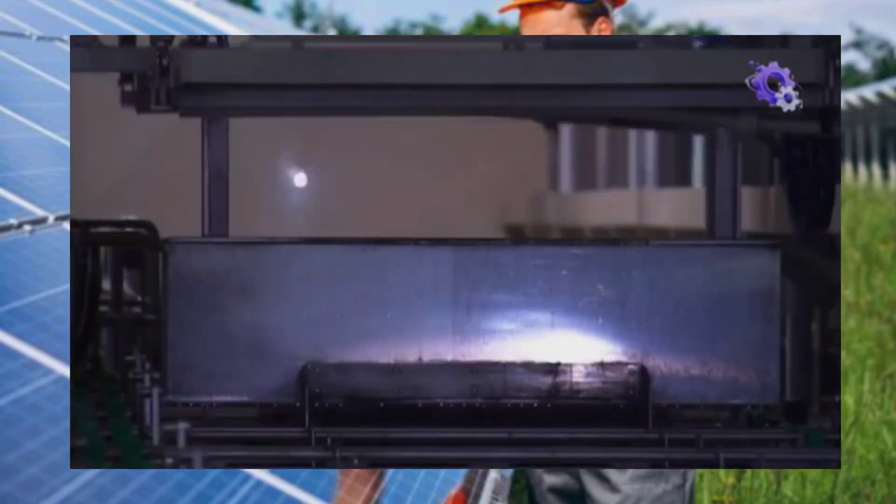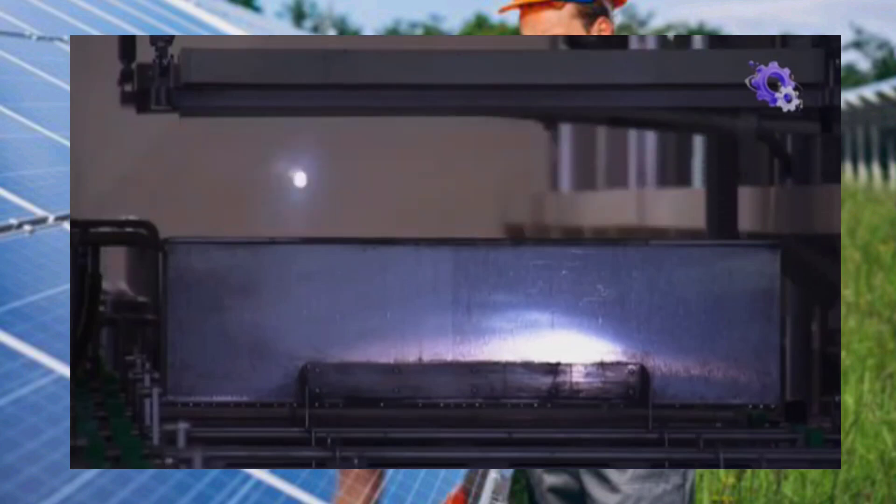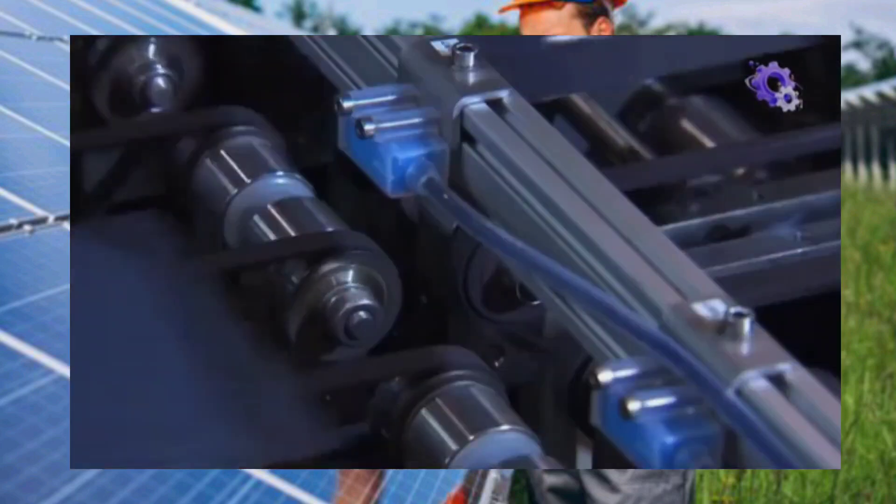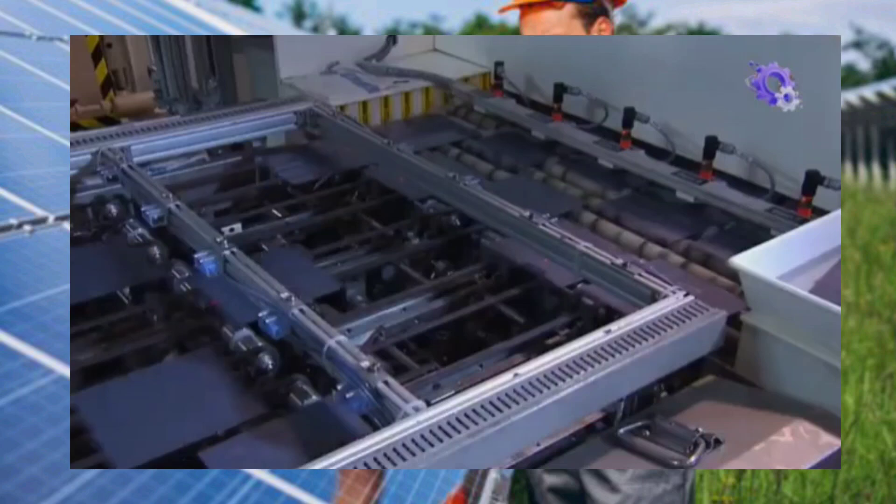An anti-reflective coating is applied to the front surface of the wafer to enhance light absorption, allowing for greater efficiency in converting sunlight into electricity.